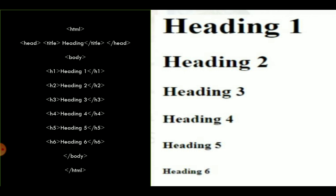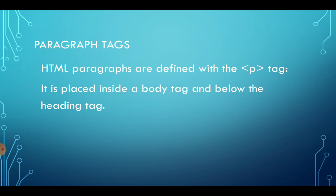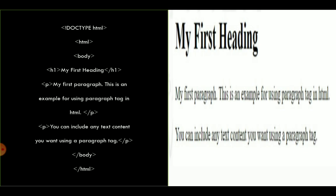You can see the result: Heading 1 is quite large, while Heading 6 is the smallest. Heading 1 is like the main heading, and Heading 6 is like a subheading. Now, paragraph tags — HTML paragraphs are defined with the 'p' tag. It is placed inside the body tag, below the heading tag. In the body tag, you write 'p', then your text, then close with '/p'.